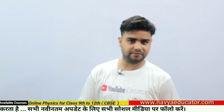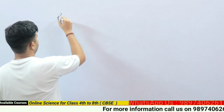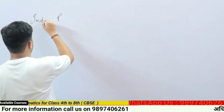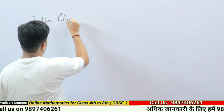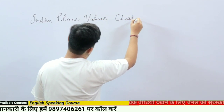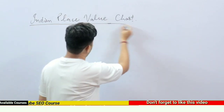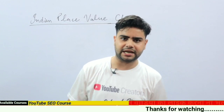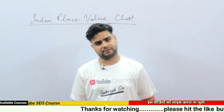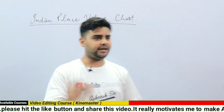The Indian place value chart is the most important thing because we can't write or tell any number's name without the help of it. This Indian place value chart only works in India — that's why it is called the Indian place value chart.